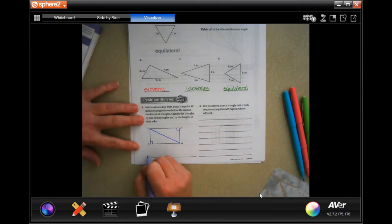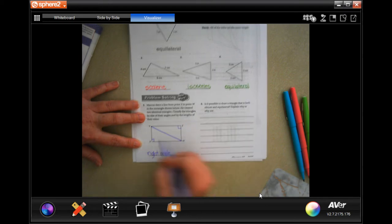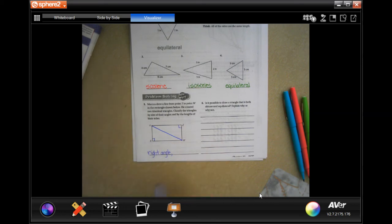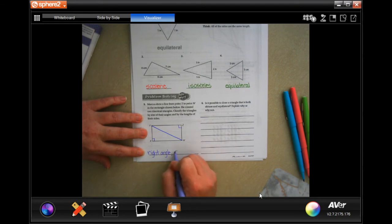And you will also notice that none of the sides are exactly the same, so one of the sides would tip the scale. Scalene.